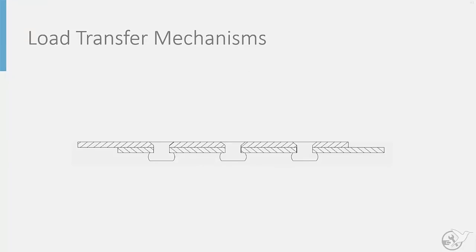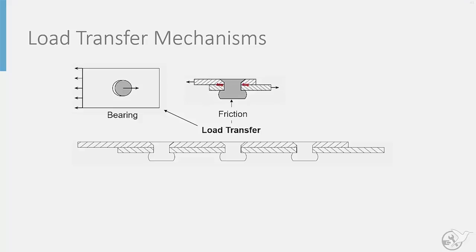In order to understand the failure modes, it is important to understand the loads involved in such a joint. The primary means for this load transfer is through bearing between the fastener and sheets. A smaller portion of the load is transferred by friction between the joined parts at each fastener location.